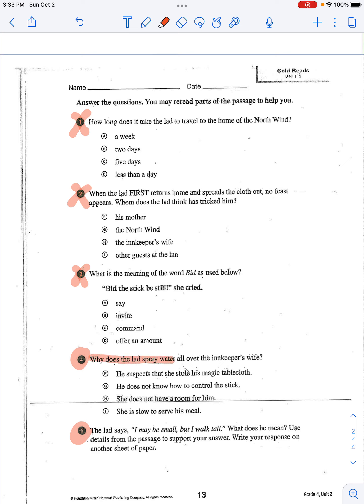Question four. Why does the lad spray water all over the innkeeper's wife? He suspects that she stole his magic tablecloth. He does not know how to control the stick. She does not have a room for him. She is slow to serve his meal. So one of those is your answer choice.